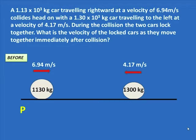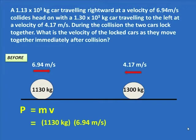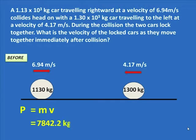We find that momentum equals mv, and we have the mass and the velocity, so we put the numbers in and multiply. Taking as many significant figures as we can on our calculator, we don't change anything. We have the momentum of the first object.